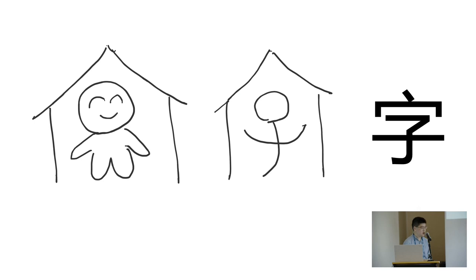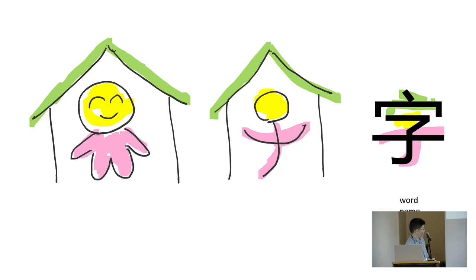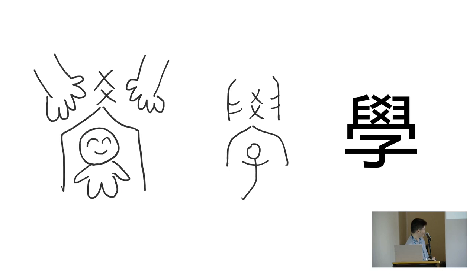Here's the body and here's the head. So when a child is born in a house — that's the house — what do you do? There's a newborn in the house and you want to give it a name. So 'newborn in a house' actually means 'name.' That's how Chinese people originally thought of the concept of a name, and that's how the character for name is written.